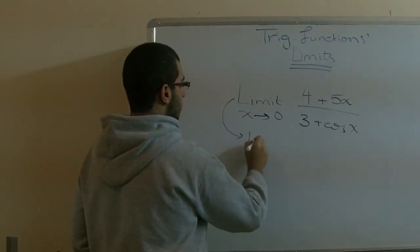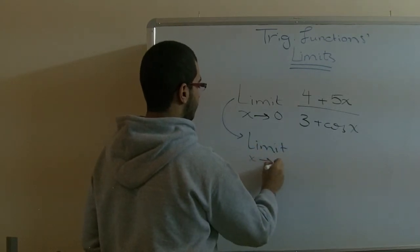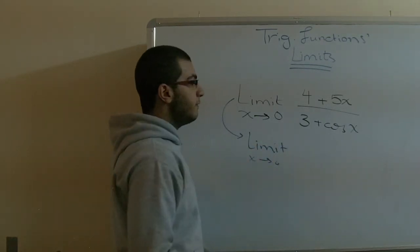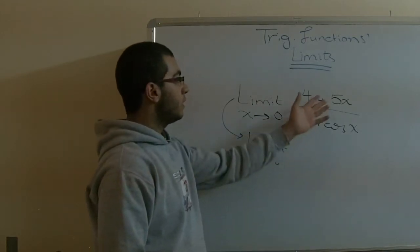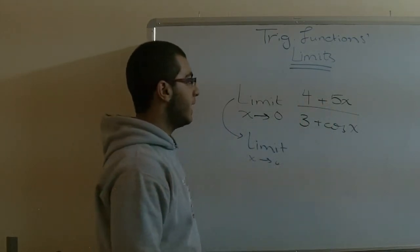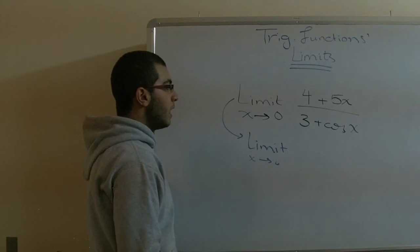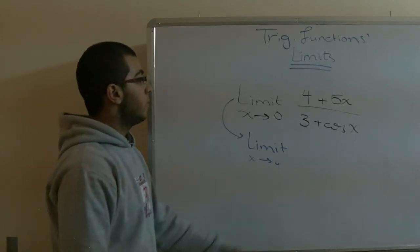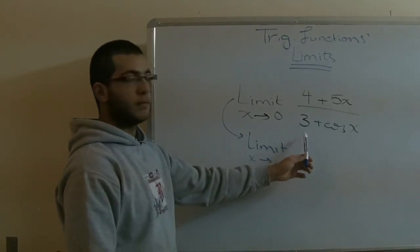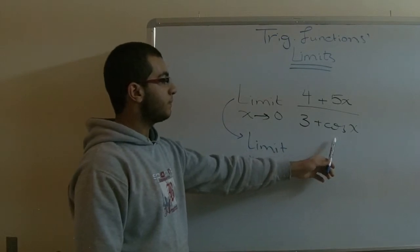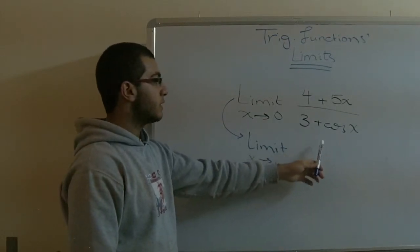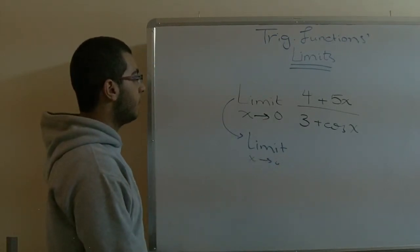We have the limit of x approaching zero. If I divide the numerator and denominator by x, I'll get an undefined answer because the denominator will have 3 over 0 plus cosine x over x. We get 1 over 0, so it will be completely wrong.